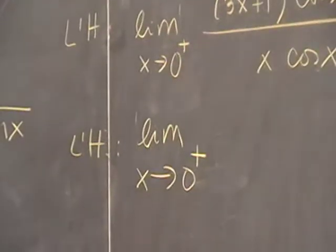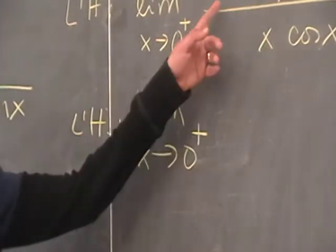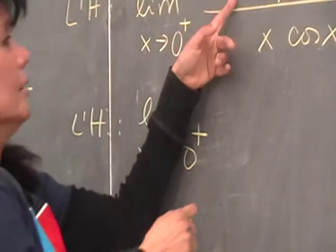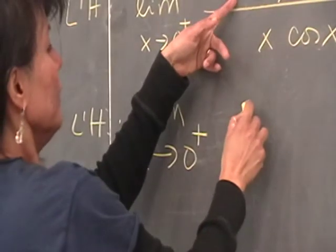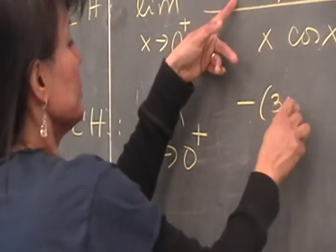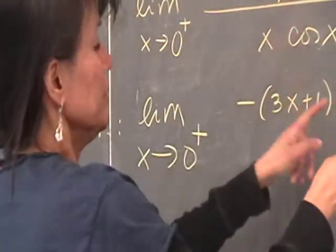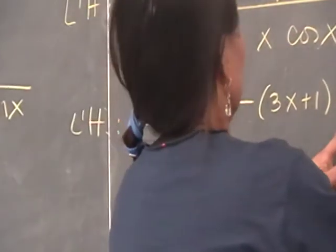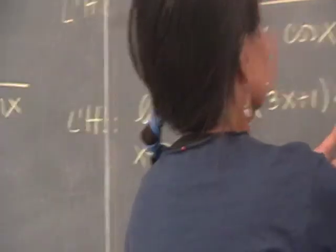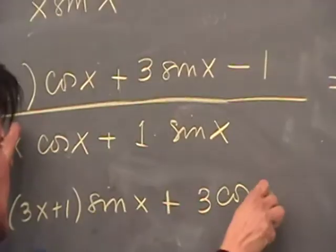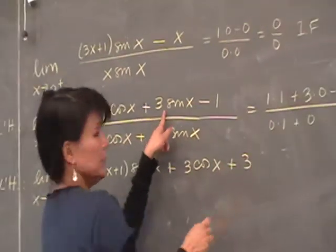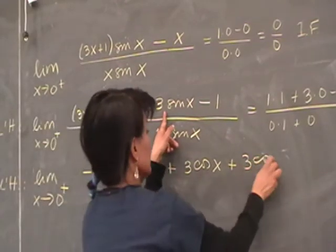So you have limit as x approaches 0 from the right of what? Let's see. So the same thing. The negative. So product, so you'll have negative 3x plus 1 sine x, basically, the first times the derivative of the second plus 3, the derivative of the first times the second, plus the derivative of 3 sine x, which is 3 cos x.